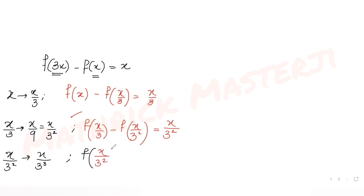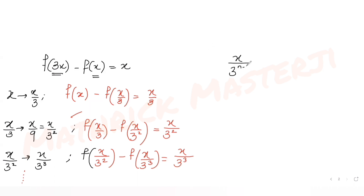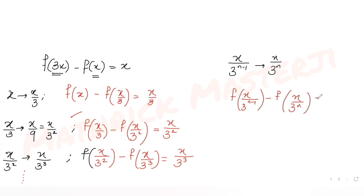Continuing this pattern, we get f(x/3²) - f(x/3³) = x/3³. In general, for the nth substitution, we get f(x/3^(n-1)) - f(x/3^n) = x/3^(n-1). Let's label these equations 1, 2, 3, 4, 5, ... up to n.